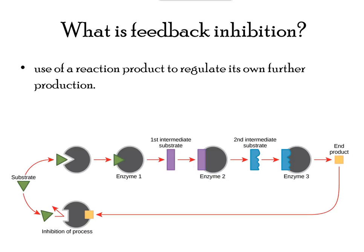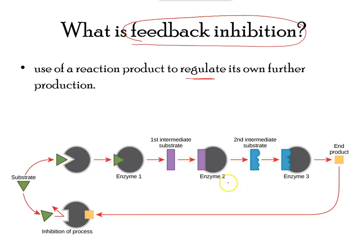In some reactions, we see a regulation where the concentration of the end product regulates the first step in a series of reactions. When more and more products are present, the process is regulated by attaching to the enzyme's allosteric site and stopping the reaction.